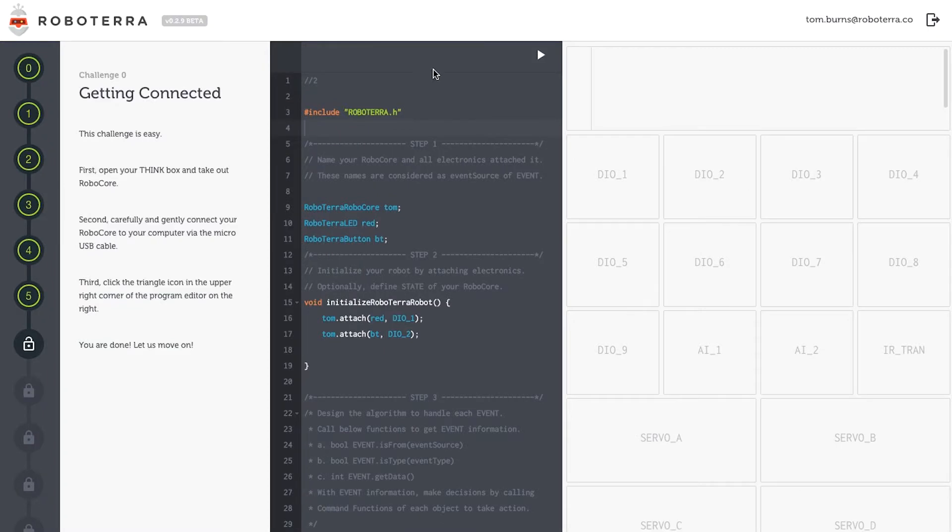Now let's look at the coding. First, I use the class name RoboTerra RoboCore to name my robot. I like to name it after myself, Tom.